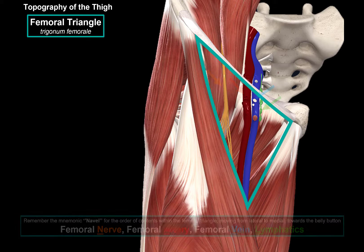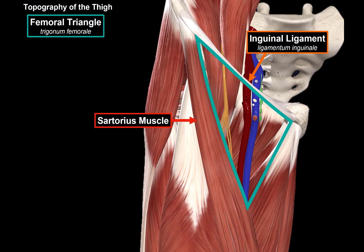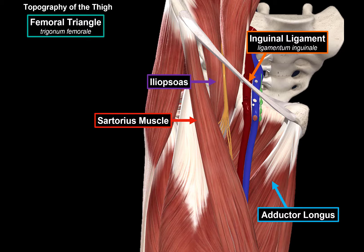Now let's take a closer look at the boundaries of this area. The lateral border is formed by the sartorius muscle, the superior border is the inguinal ligament, and the medial border is the adductor longus muscle. In other words, the base of the triangle is the inguinal ligament and the apex is directed inferior-medially. Deep to the contents, the floor is made by the iliopsoas laterally and the pectineus medially, as you see here.